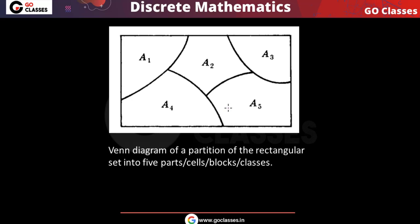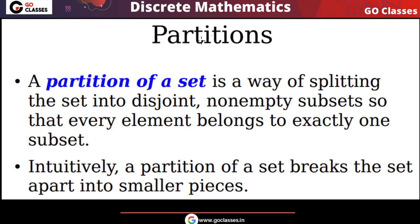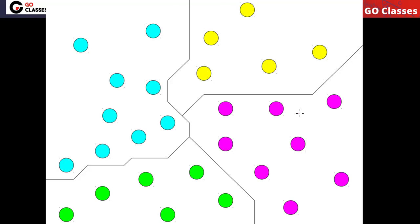Similarly, this rectangle can be partitioned into five parts. The union of all parts equals the rectangle, they are mutually disjoint, and all of them are non-empty. The definition of partition of a set is: you split the set into disjoint non-empty subsets such that every element belongs to exactly one subset.